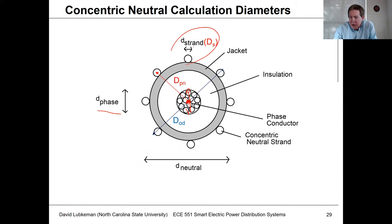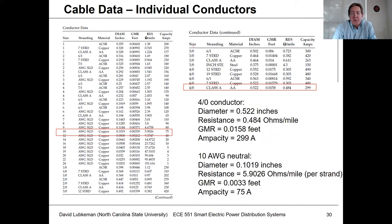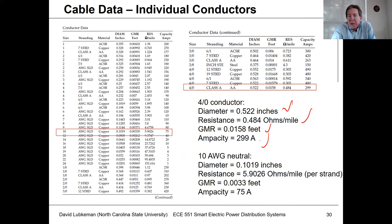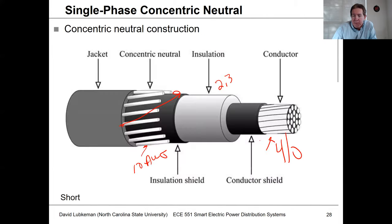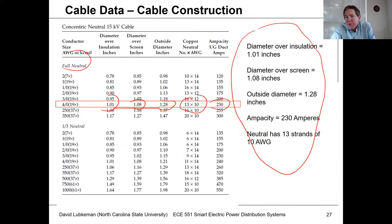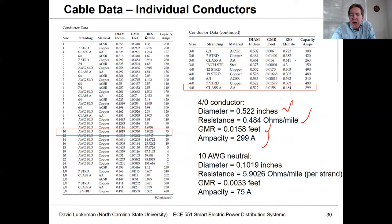The key distances needed are: the diameter of the phase conductor, the diameter of each strand, and D_PN — the distance from the center conductor to the middle of a concentric neutral strand. For the 4/0 we get diameter, resistance in ohms per mile, and GMR. For the #10 wire we get diameter, resistance, and GMR, and we use all of this in the cable calculation.